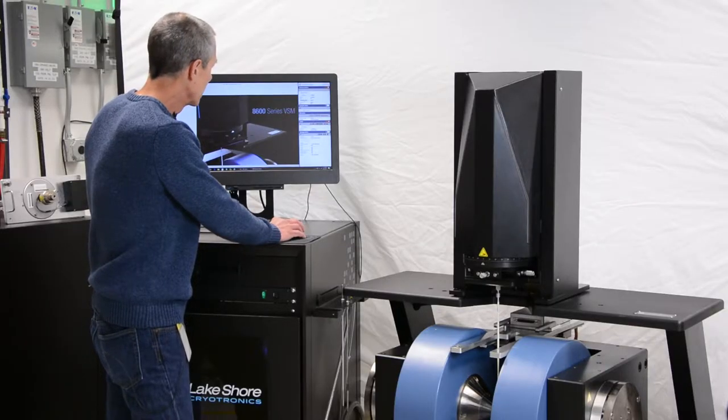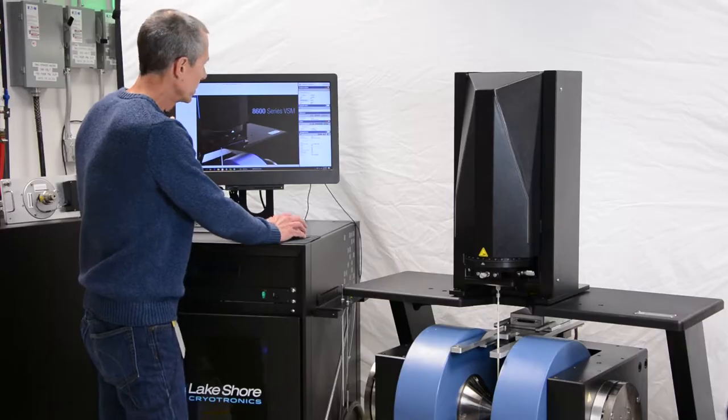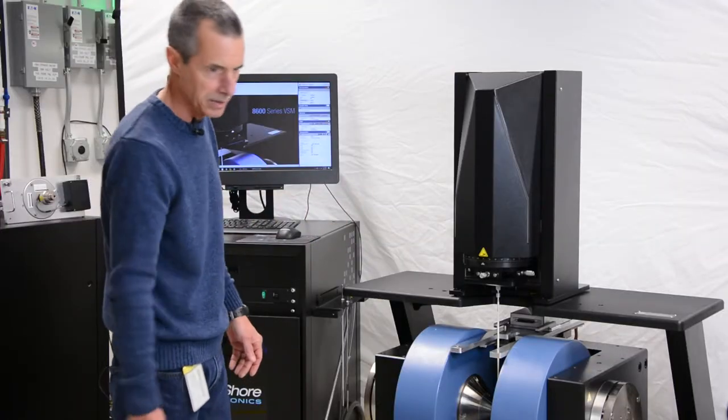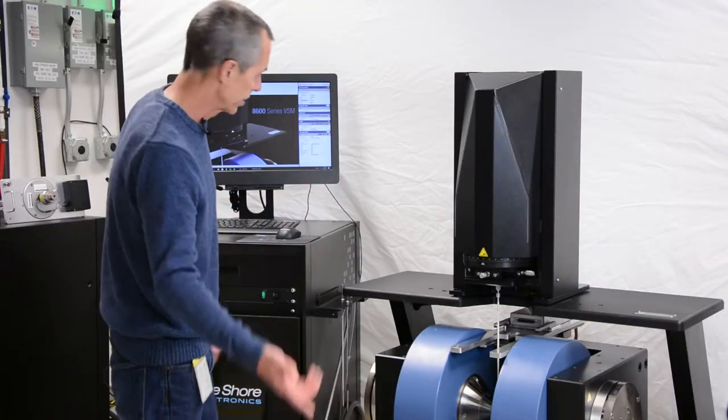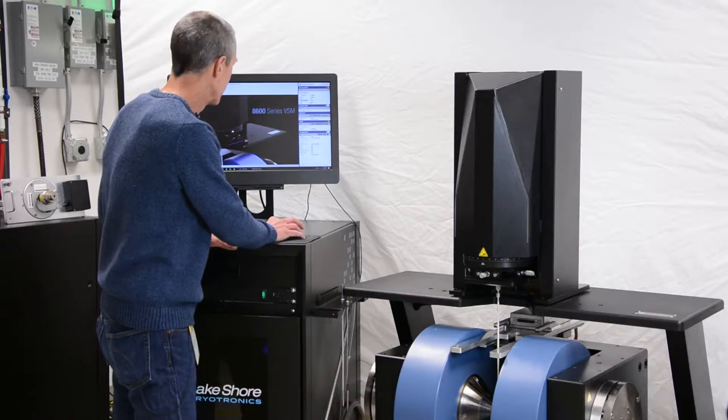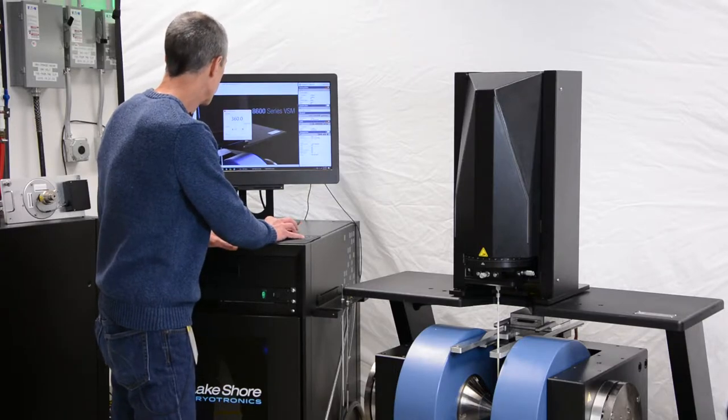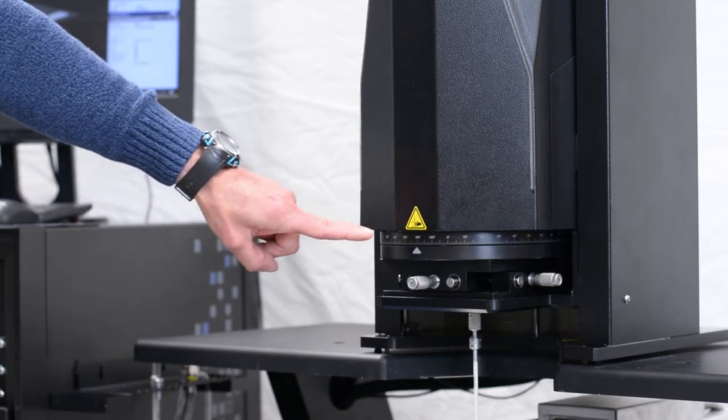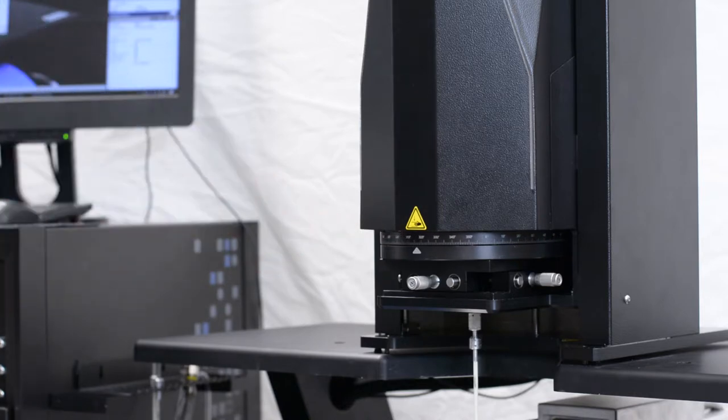And then the other thing I wanted to show you is the autorotation included by default with all 8600 systems. And here we can continuously rotate the sample in any direction. So in this case, I'm simply going to rotate it 360 degrees, and you can see that it is automatically rotating.